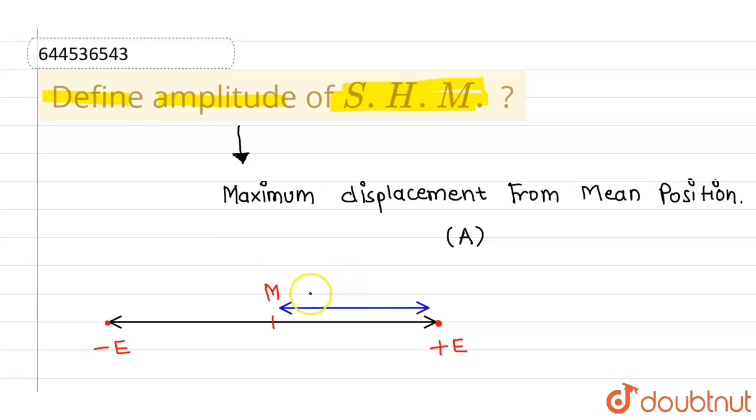This blue highlighted line or length is called amplitude. This one is amplitude, and this one is also amplitude.